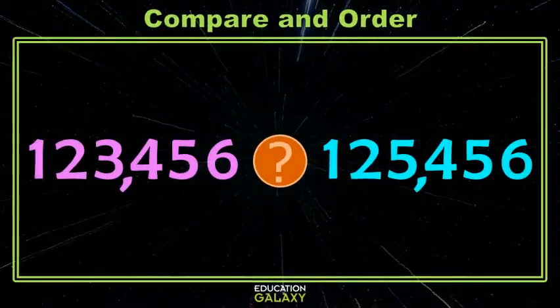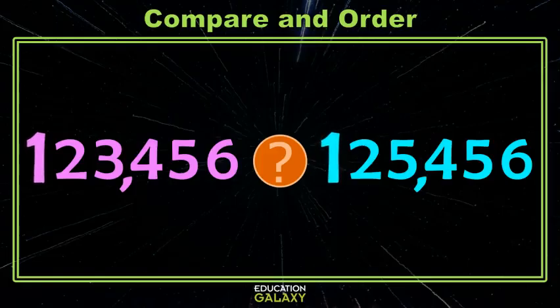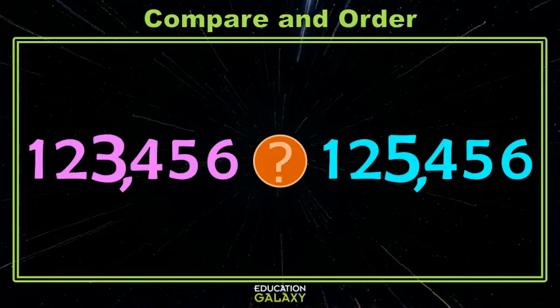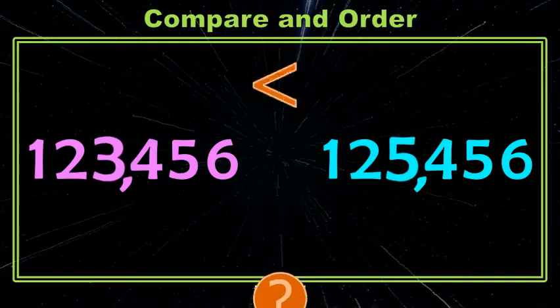We want to start with our leftmost place value. In this case it's the hundred thousands, and it appears I have a one in both places — that doesn't help me decide which number is bigger. If we move to the ten thousands, I have a two in both places, so that doesn't help me either. When I get to the thousands place, I have a three and a five. Those are different, so now I can make a comparison. The five is larger than the three, which means the number on the right is larger altogether.